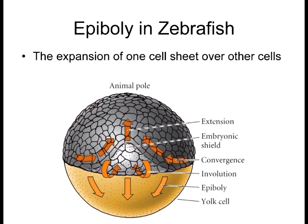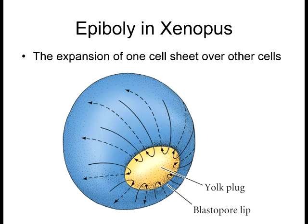Epiboly is when cells expand and essentially cover or envelop other cells or the yolk itself. In zebrafish, after the initial cleavage, cells undergo epiboly — expanding to completely surround and envelop the yolk. In Xenopus, not only do cells involute from beneath, but the outer layer of cells also undergoes epiboly, completely surrounding and sealing off what's called the yolk plug — that tiny area that eventually closes up completely.